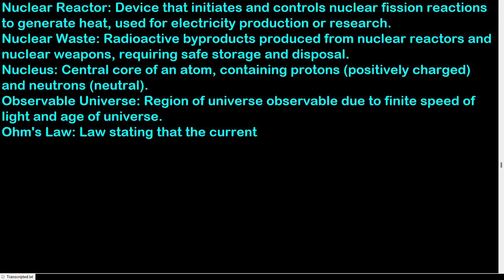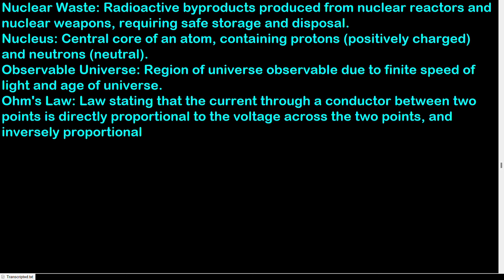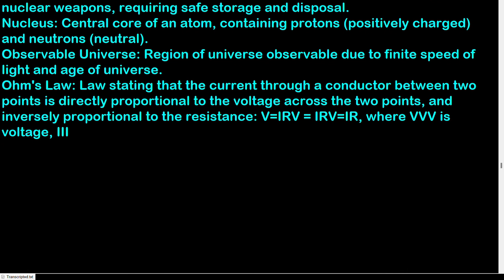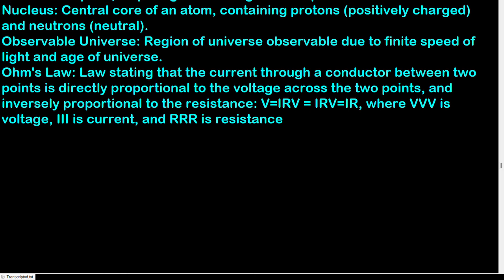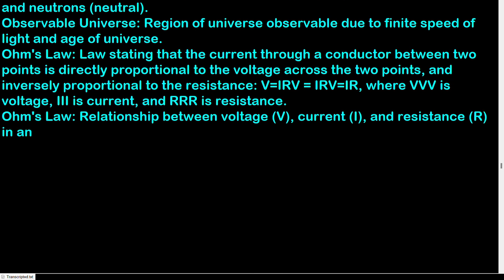Ohm's law: the current through a conductor between two points is directly proportional to the voltage across the two points and inversely proportional to the resistance; V = IR. Optical aberration: imperfection in image formation by lenses or mirrors, including spherical aberration, chromatic aberration, and coma. Optical fiber: thin, flexible fiber made of glass or plastic used to transmit light signals over long distances with minimal loss. Optical instruments: devices that use lenses or mirrors to observe or manipulate light, such as microscopes, telescopes, and cameras. Orbital velocity: minimum velocity required for an object to achieve orbit around a celestial body.